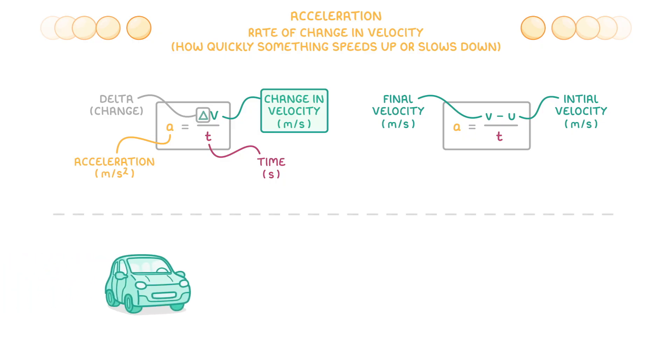For example, if it took a car 5 seconds to accelerate from 15 to 35 meters per second, then 15 meters per second would be the initial velocity, and 35 meters per second would be the final velocity. So to calculate the car's acceleration, we would find the change in velocity, which would be 35 minus 15, so 20 meters per second, and divide that by the time of 5 seconds, giving us an acceleration of 4 meters per second squared.